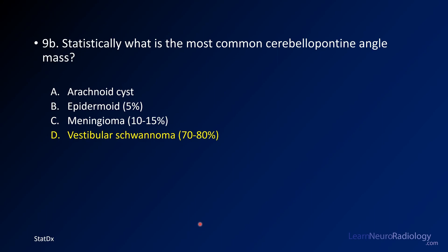As for the most common cerebellar pontine angle mass: by statistics, vestibular schwannomas comprise far more of the cerebellar pontine angle masses than any of the others, so that is by far the most common.